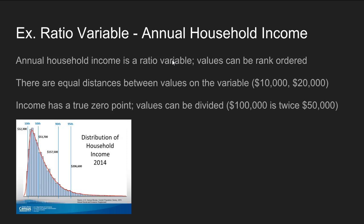An example of a ratio variable is annual household income. Values can be ranked and ordered, and there are equal distances between values — the interval between $10,000 and $20,000 is the same as between $20,000 and $30,000. Income has a true zero point, since someone can have zero income. Because of this, values can be divided — we know that $100,000 is twice $50,000. These are the characteristics of a ratio level variable.